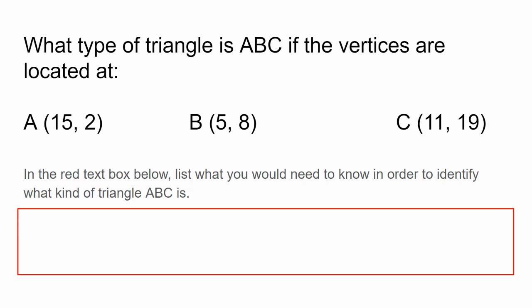Suppose you are given the coordinates of three vertices of a triangle. Given that, how can we determine what type of triangle it is? At first, that might seem impossible, but think about what information you would need in order to identify the triangle. Also, think about what information you could calculate from these coordinates. Pause the video here and record your thoughts in the red box on your capture sheet. What would you need to know or figure out in order to be able to identify this triangle?